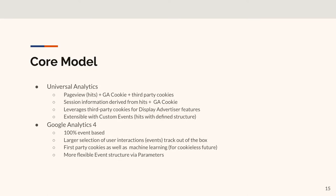The core model in Universal Analytics is page views, a Google Analytics cookie, and third-party cookies for referral information and ad retargeting. Session information is derived from hits and page views via the Google Analytics cookie - it figures out when a session started and when the user stops interacting with the website. It leverages third-party cookies for display advertising features, and you can extend it with custom events structured as hits with additional metadata.